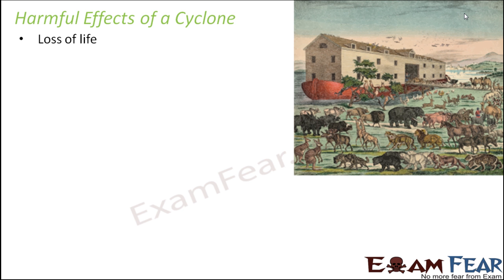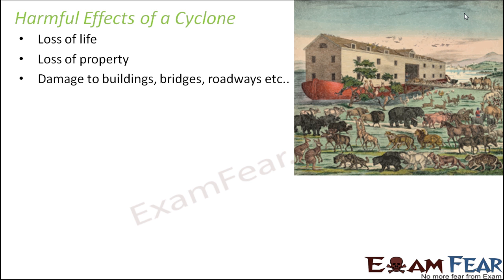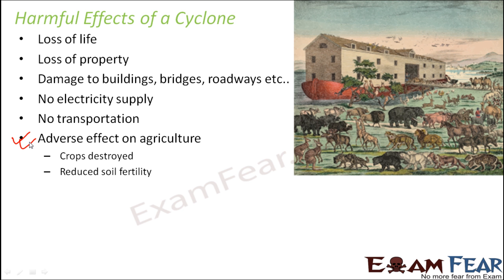The harmful effects of a cyclone include loss of life — high-speed winds generate high waves in the water, causing floods that kill people and animals. There is massive loss of property: buildings are damaged, houses are ruined, people become homeless, and bridges and roadways are destroyed. When roadways are damaged, the entire transportation system is affected. There is also no electricity supply when everything goes underwater.